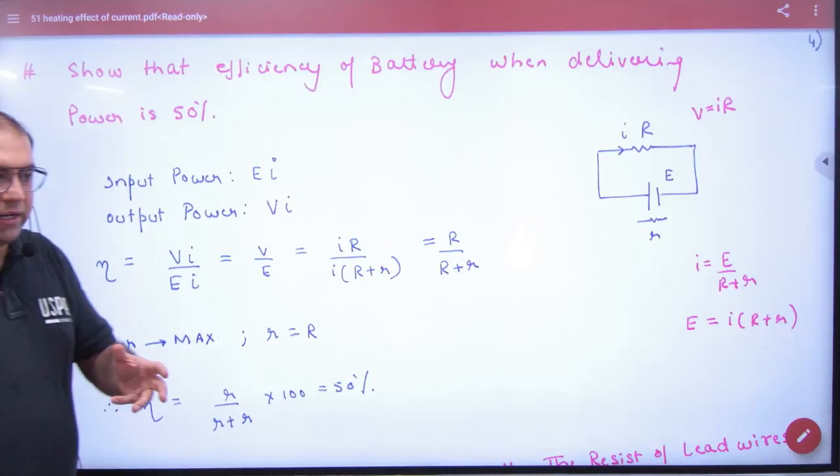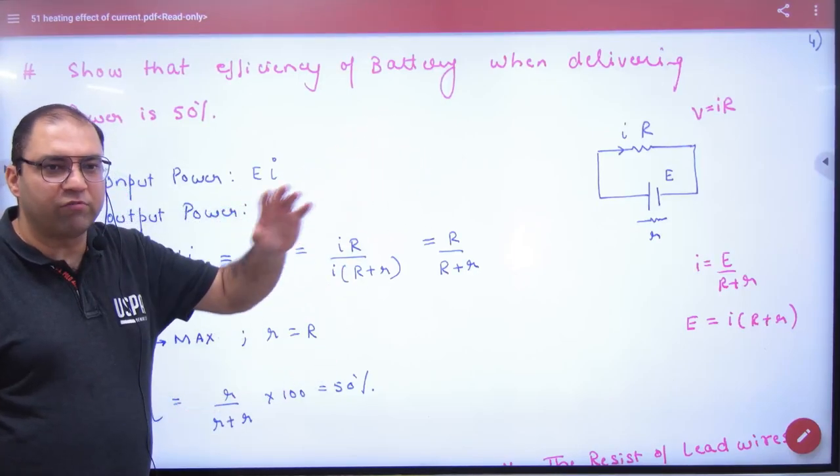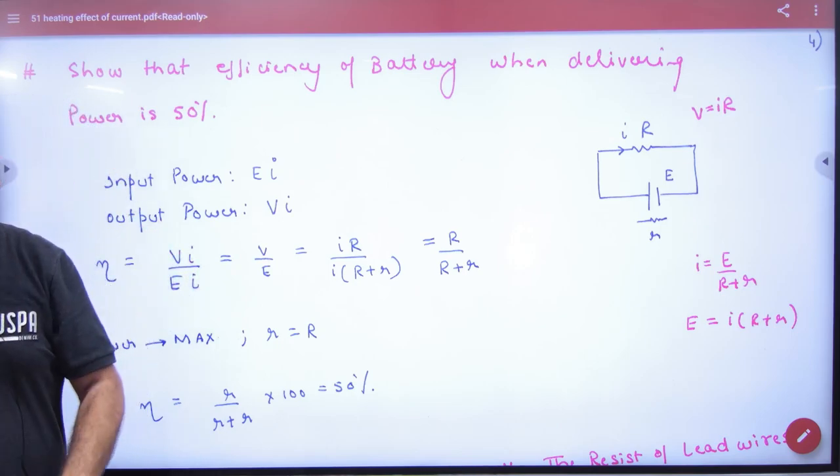So the topic is that when the battery is running out of power, it cannot give up to 50% of power. Why is that?